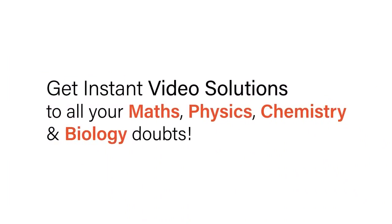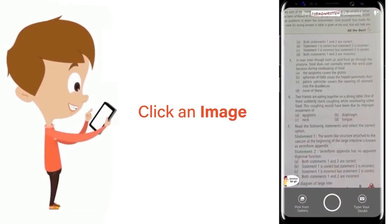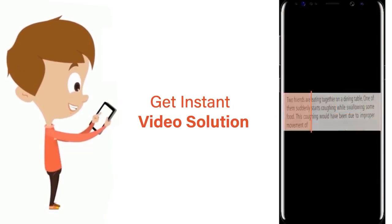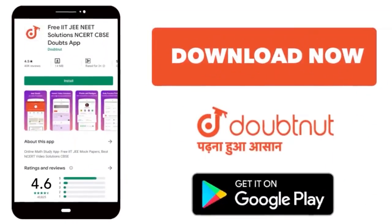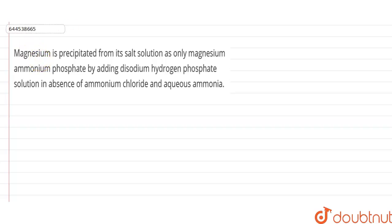With DoubtNet, get instant video solutions to all your maths, physics, chemistry and biology doubts. Just click the image of the question, crop the question, and get instant video solution. Download DoubtNet app today. Here, the question given is that magnesium is precipitated from its salt solution.